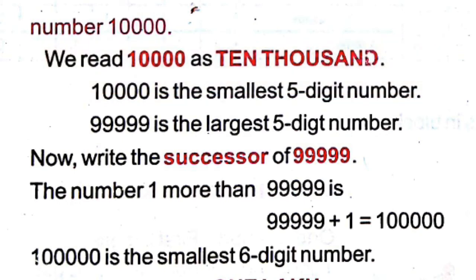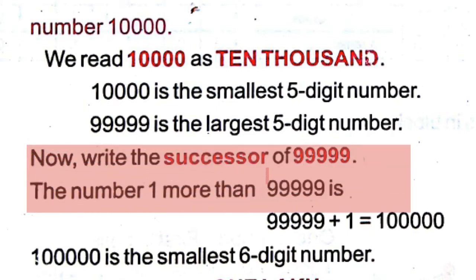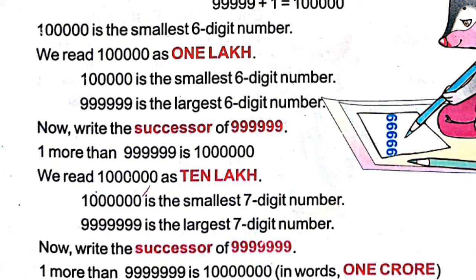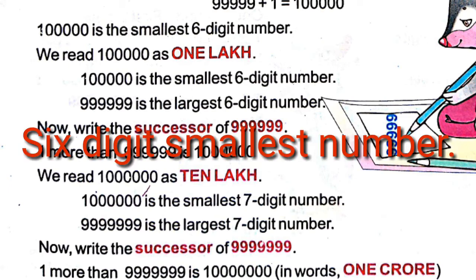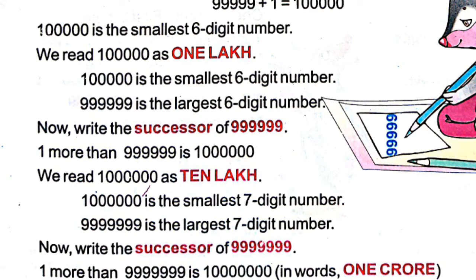The five-digit largest number is 99999 — five nines make the five-digit largest number. The successor of the largest five-digit number is 1 with five zeros, that is 1,00,000. We read one with five zeros as one lakh, which is the six-digit smallest number and is the successor of the five-digit largest number.